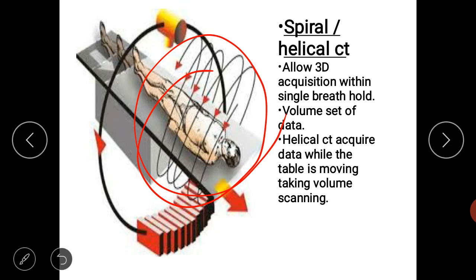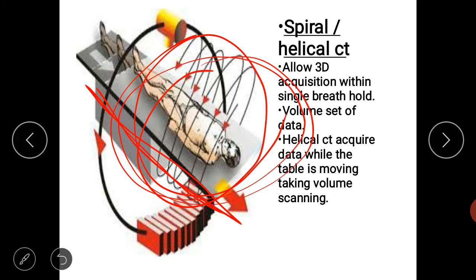The table also moves in spiral or helical CT, which makes it different from other models and generations. In this, the table is moving and the X-ray tube is also moving at the same time, both moving simultaneously to acquire the image. This shortens the time and gives us a volume image.